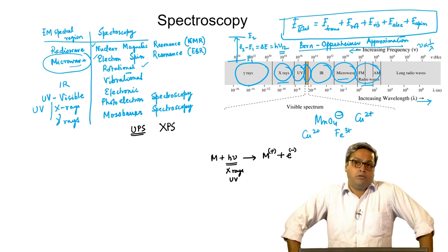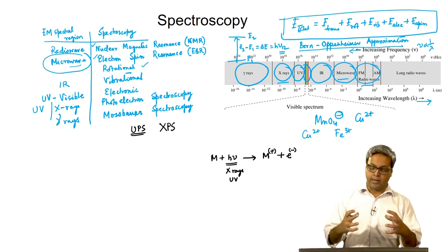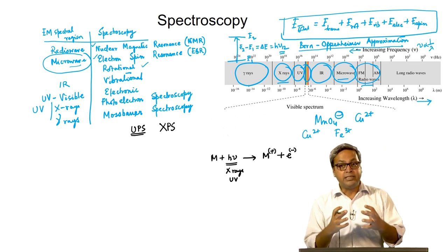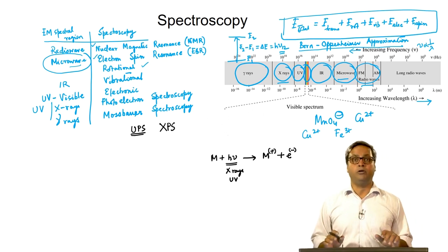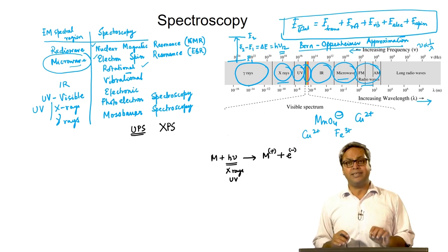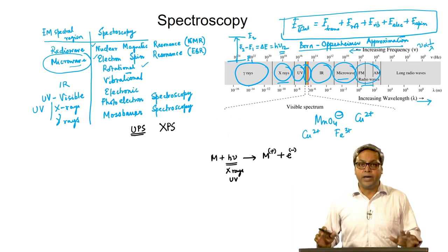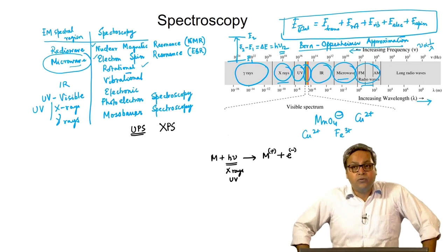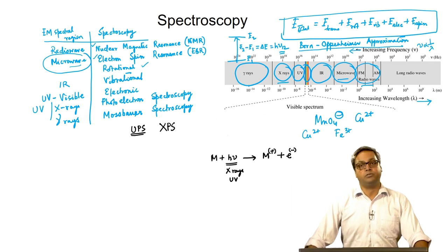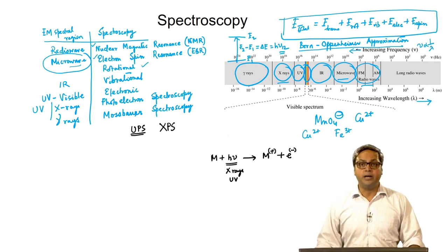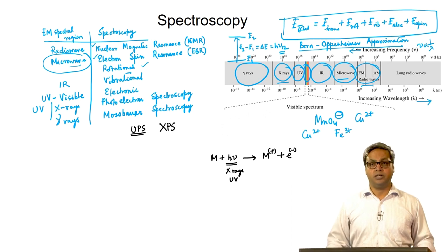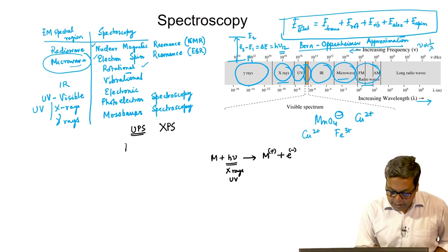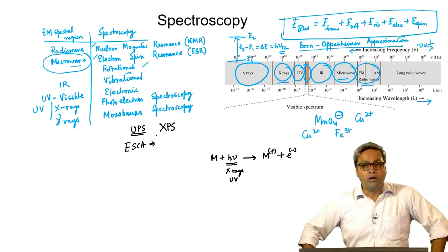When bonding between atoms forms molecules, only the valence electrons are involved. Core electrons are not involved, and their binding energy with the nucleus is least affected. Thus, XPS faithfully reports the signature of atoms in molecules, and chemical elemental analysis can be done using XPS. This procedure is known as ESCA — Electron Spectroscopy for Chemical Analysis.